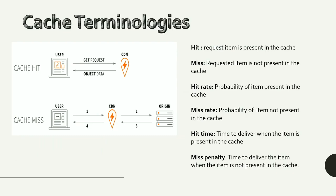These are the common terminologies used in caches. A hit is when the requested item is present inside the cache. A miss is when the requested item is not present in the cache. Hit time is the time to deliver data when the item is present in the cache. Miss penalty is the additional time required when the item is not present, meaning the data must be retrieved from main memory.